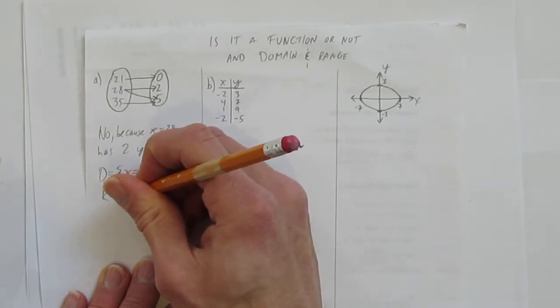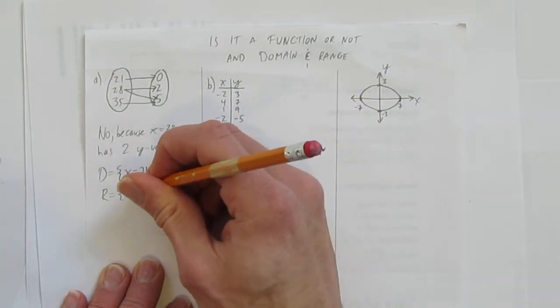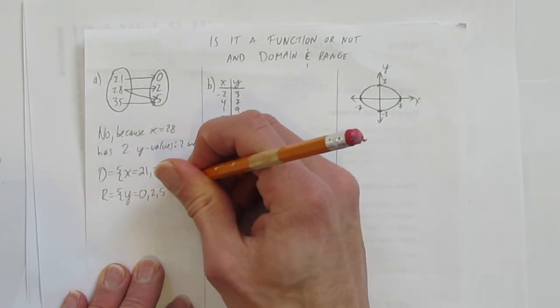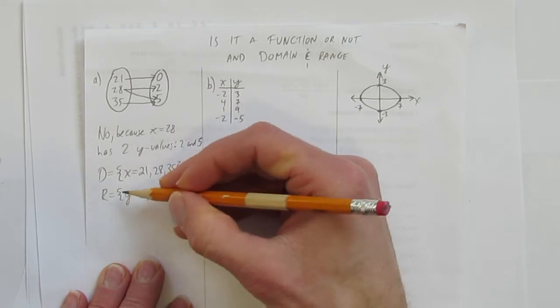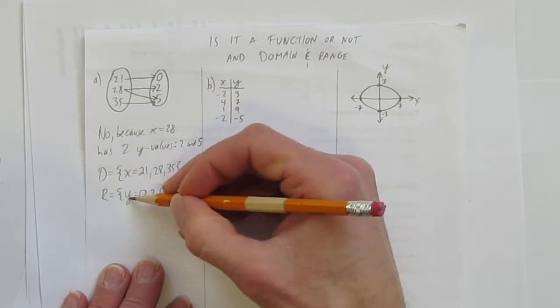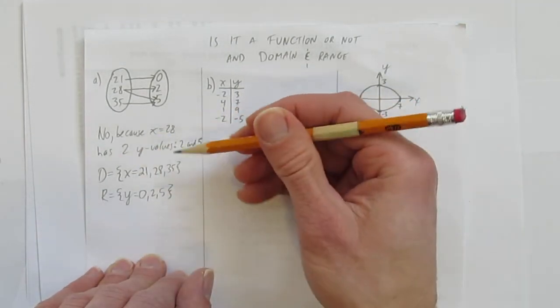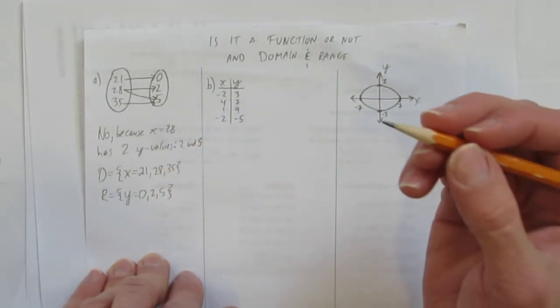It's just as simple for the range. You put your curly brace, you write y, and you list off the possibilities that y could be. The range is the set of y equals 0, or 2, or 5. Done. We know it's not a function, we explained why, and we stated domain and range.